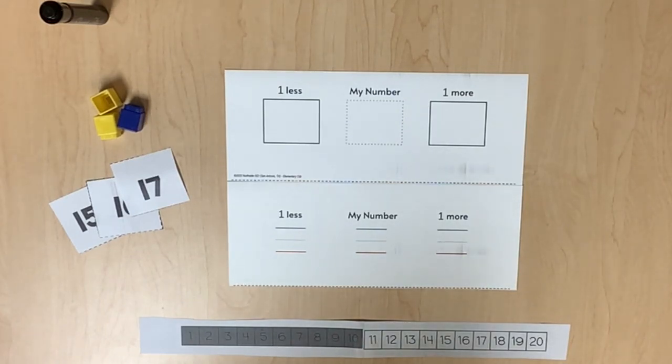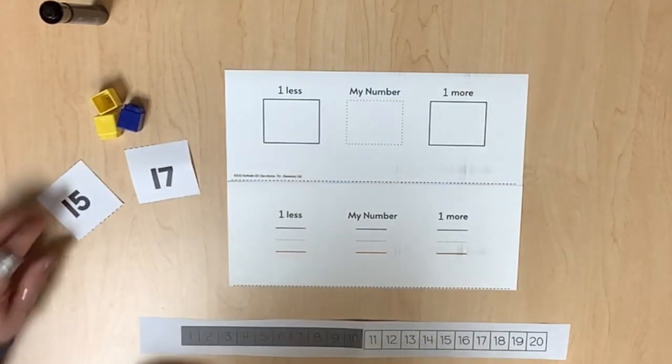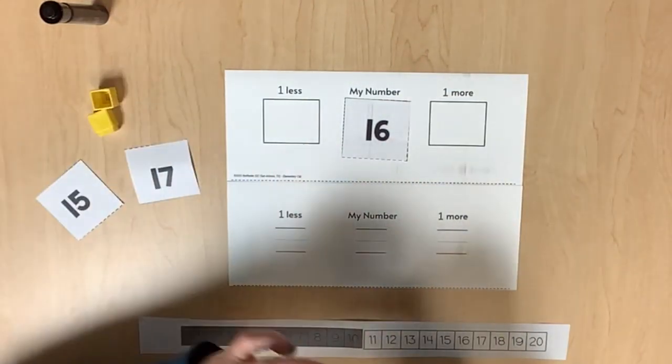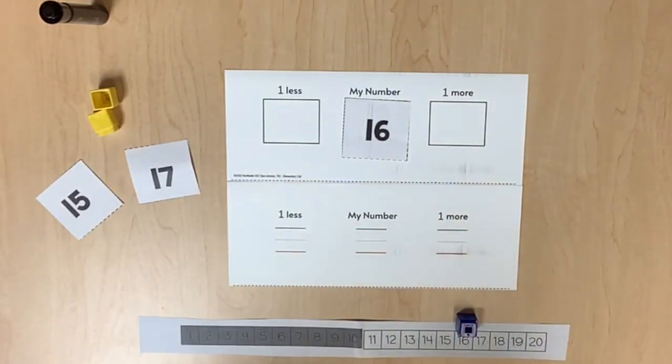Using number cards, model a given number such as 16. Notice the number path to 20 is being used again where 1 to 10 are shaded gray. Model this number on the number path by placing a cube on the number 16.